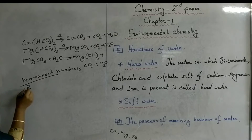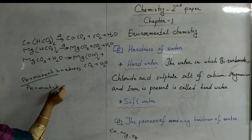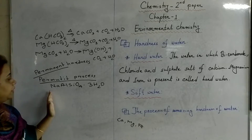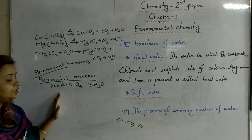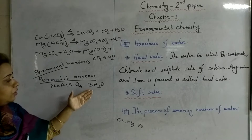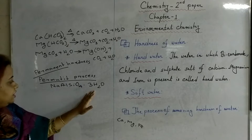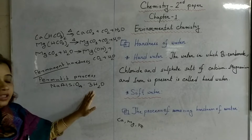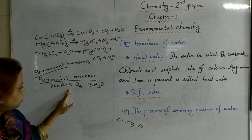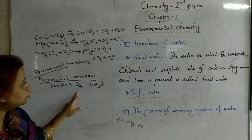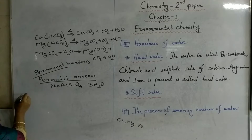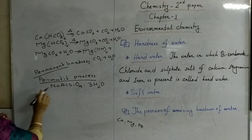Come to the permutite process. Permutite is a hydrous sodium aluminium orthosilicate — hydrous means water is present. The principle of the permutite process is that the basic portion of permutite and the basic portion of the salt dissolved in hard water become exchanged. The basic portion of permutite is the sodium ion.